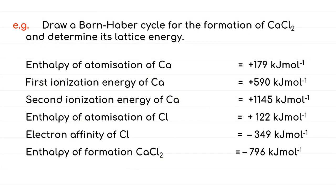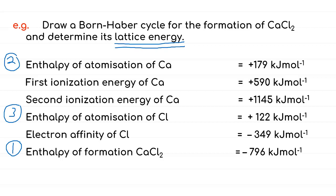Let's try this example: draw a Born-Haber Cycle for the formation of CaCl₂ and determine its lattice energy. We are going to arrange the enthalpies in the order of reactions taking place in the Born-Haber Cycle. We start with the enthalpy of formation of CaCl₂, followed by enthalpy of atomization of Ca, then enthalpy of atomization of Cl, then first ionization energy of Ca, second ionization energy of Ca, and electron affinity of Cl. The lattice energy will be number 7.